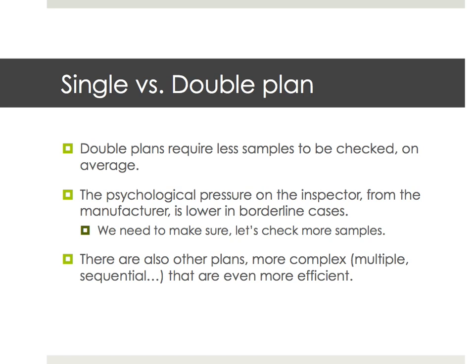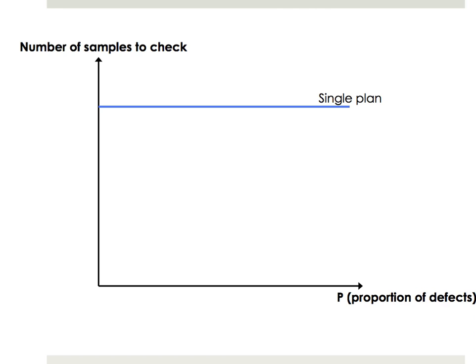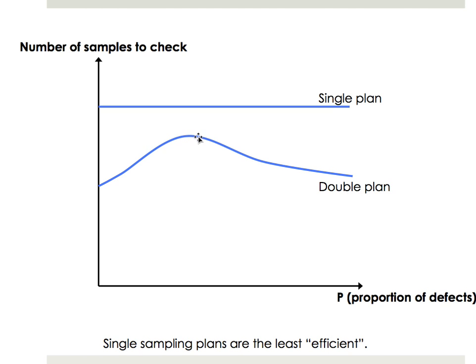With double sampling plans, when it's borderline, very often there's a second step — checking some more samples — so it removes some of that psychological pressure. To show how it is more efficient: in a single sampling plan, it's always the same number of samples checked regardless of the proportion of defects. On average, in a double plan the number goes up when it's close to the AQL, then goes down again, but most of the time it's below the single plan — meaning fewer samples to check. So it's more efficient.